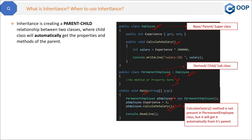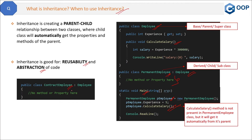Why is inheritance an important concept in software applications? Inheritance is good for reusability and abstraction of code. For example, if tomorrow you get a new type of employee — a contract employee — you can again derive from the same base class employee to get its methods and properties. Without inheritance, you would have to write all those methods and properties inside both permanent employee and contract employee classes, which is basically code duplication. So we are reusing one method in two places using inheritance.